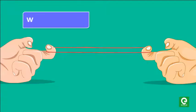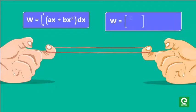We get W = integral from 0 to L of (ax + bx²)dx. Integrating this gives us W = ax²/2 from 0 to L plus bx³/3 from 0 to L.